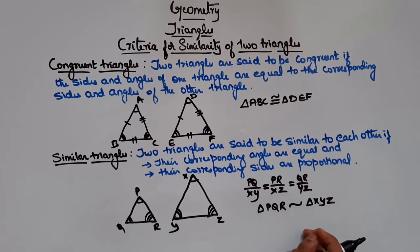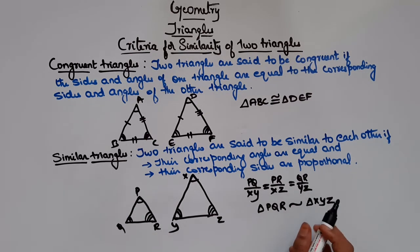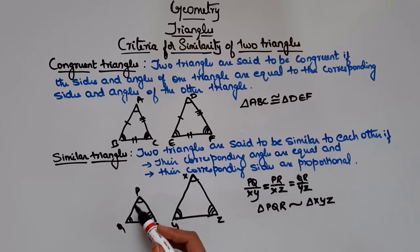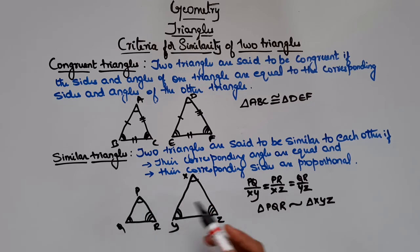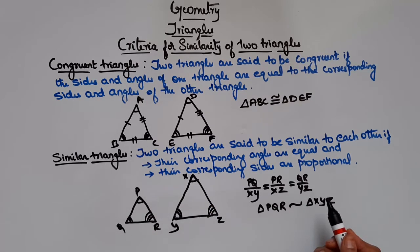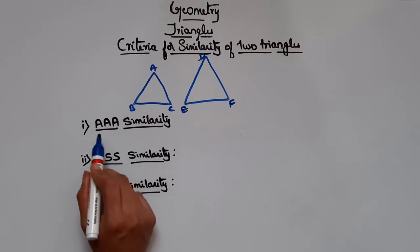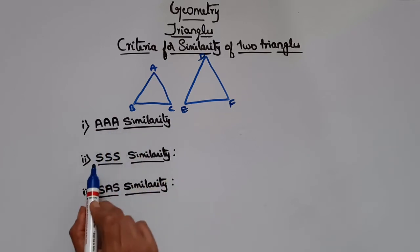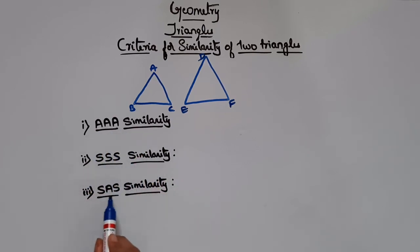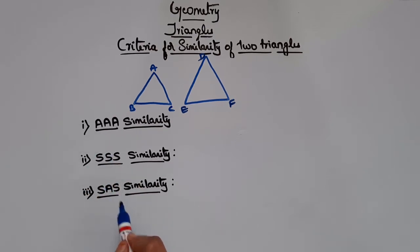This we have already studied in 9th standard. But now we will see three criteria by which you can directly say that two triangles are similar, so we don't have to check all three angles and all three sides. There are three criteria for similarity: AAA similarity, SSS similarity, and SAS similarity — these are the theorems we will see in detail in upcoming videos.